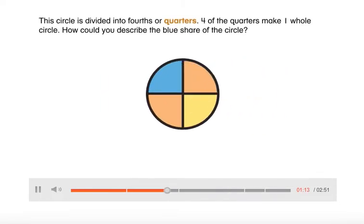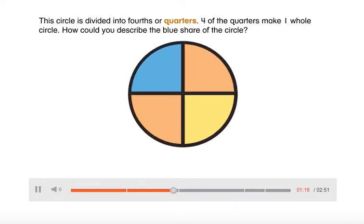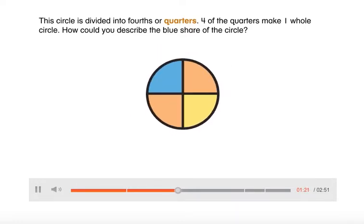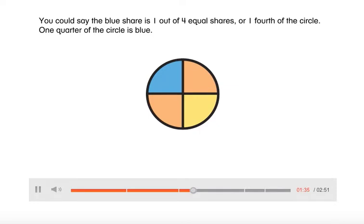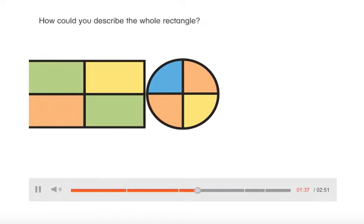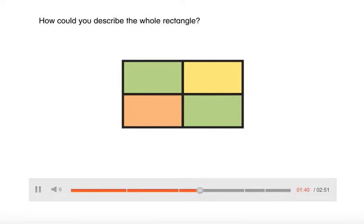This circle is divided into fourths, or quarters. Four of the quarters make one whole circle. How could you describe the blue share of the circle? You could say the blue share is one out of four equal shares, or one-fourth of the circle. One-quarter of the circle is blue.